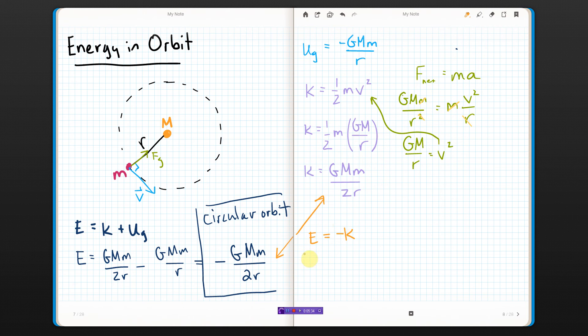Now, for an elliptical orbit, all we have to do is replace the R with the semi-major axis. So, for an ellipse, elliptical orbit, the total energy of a satellite in elliptical orbit is equal to negative G big M, little m, over 2a, where a is the semi-major axis of the ellipse.